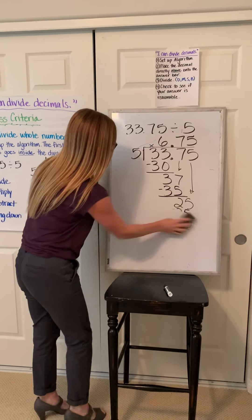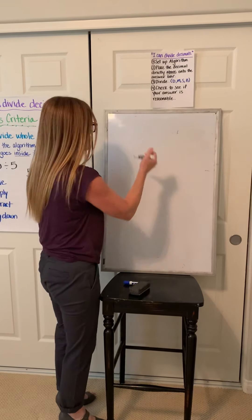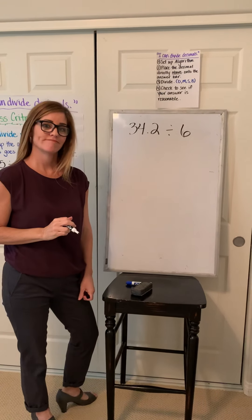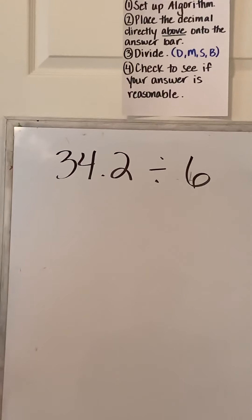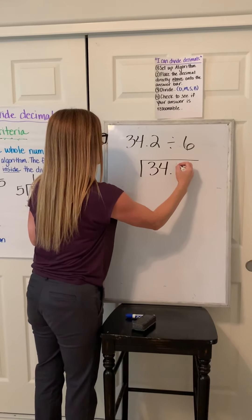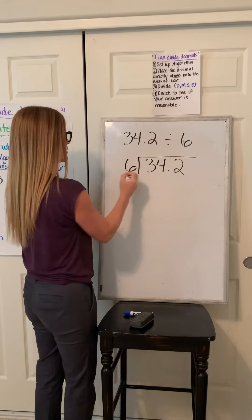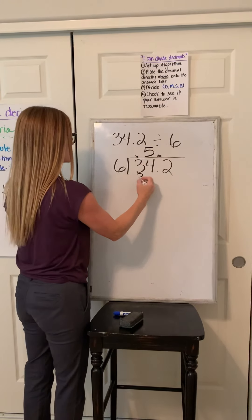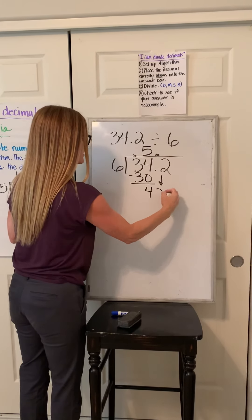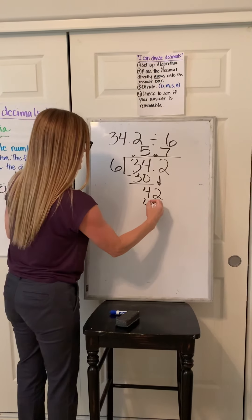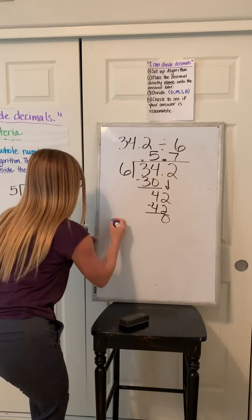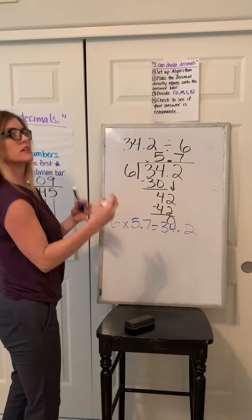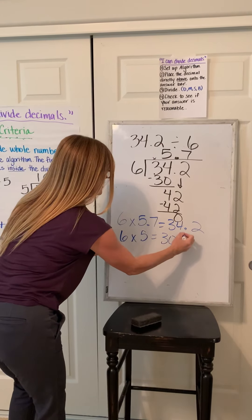I'm going to give you one to try on your own. You'll get no remainder on this problem, so if you are getting a remainder, you know you're making an error somewhere. Go ahead and hit pause and give that one a try. The problem is 34.2 divided by 6. Place it inside the house — first number inside. Place your decimal up immediately. 6 won't go into 3, but 6 will go into 34 — 5 groups. I have 4 left over. Bring down that 2. 6 into 42 is 7. 7 times 6 is 42 — no remainder. Reasonability check: 6 times 5.7 equals 34.2. Turning to whole numbers: 6 times 5 is 30, and that's reasonable.